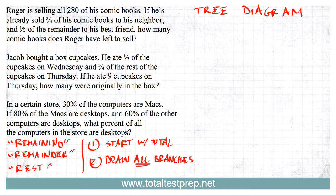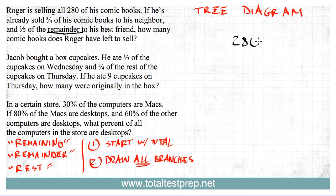In this first problem, we're told that Roger is selling all 280 of his comic books. He's already sold three quarters of his comic books to his neighbor and one fifth of the remainder to his best friend. How many comic books does Roger have left to sell? This is a word problem with fractions and the word 'remainder' in it, so we're going to use a tree diagram. We start with the total — 280 comic books — and make one branch for what's sold: three quarters of 280.